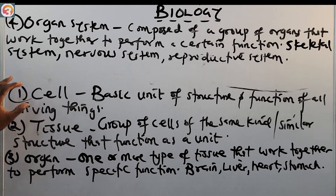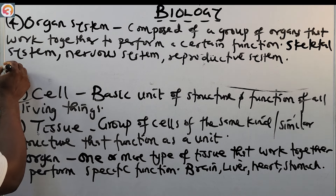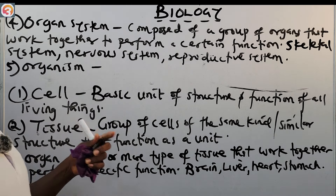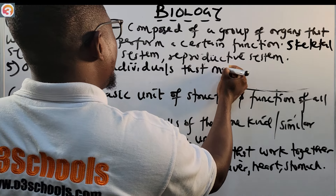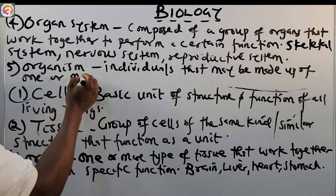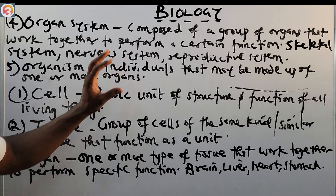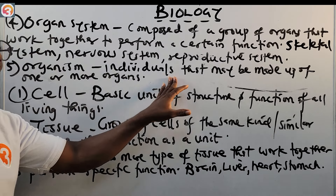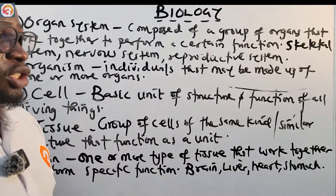The fifth and final level is the organism. So in summary: number one is the cell, number two is tissue, number three is the organ, number four is the organ system, and number five is the organism. An organism is an individual that may be made up of one or more organs.